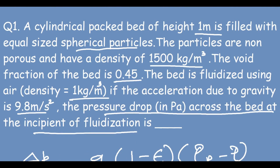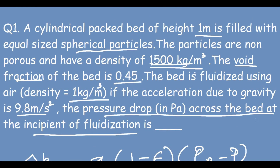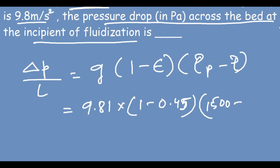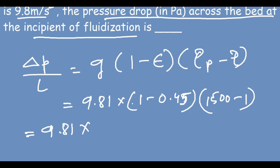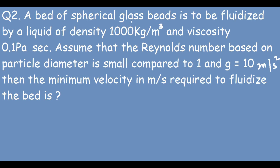g = 9.81, ε = 0.45 so (1 − 0.45) = 0.55, ρp = 1500, ρ = 1. So: ΔP/L = 9.81 × 0.55 × (1500 − 1) = 9.81 × 0.55 × 1499 ≈ 8087.85 Pa/m. That is the answer.